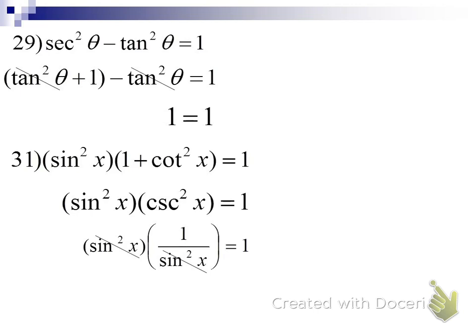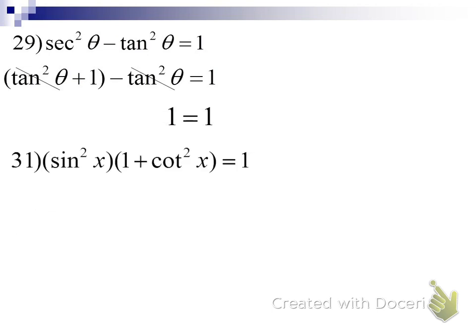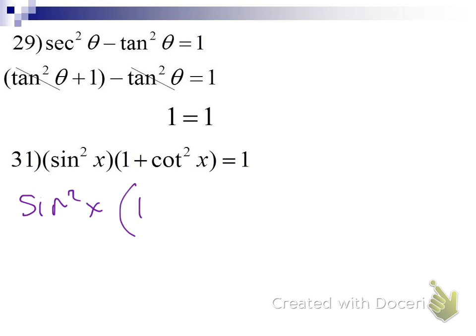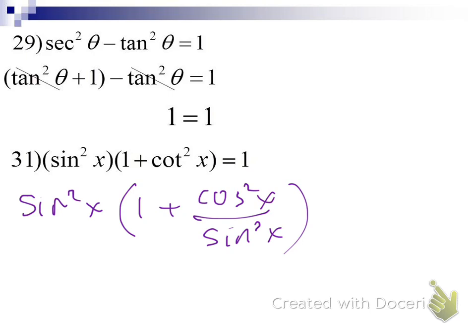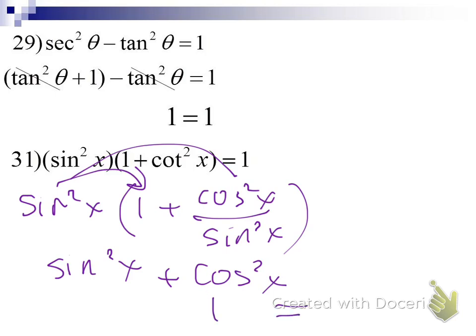Did anybody do anything different there? Let me show you what somebody might be tempted to do — and it works. Going back to our day-one strategy, we have sine squared of x times (one plus cotangent squared), where cotangent squared is cosine squared over sine squared. If we distribute, we get sine squared of x plus — the sine squareds cancel — cosine squared of x, which equals one by the Pythagorean identity.